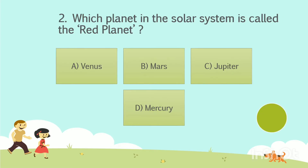Question number 2. Which planet in the solar system is called the red planet? Option A: Venus. Option B: Mars. Option C: Jupiter. Option D: Mercury. Your time starts now. The answer is Option B, Mars.